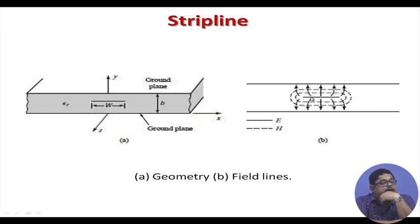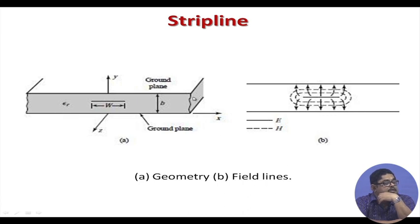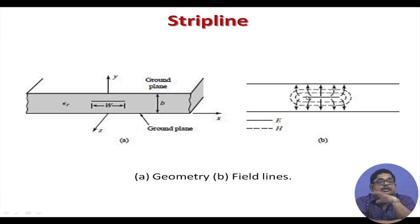This is the side view of the structure - top is metal, bottom is metal, and in between all is dielectric. The ground planes are grounded so their potential is 0, while the central strip has some non-zero potential. Field lines will start from the central conductor and end at the ground planes. The e-field is like this, and the h-field will be something like this.